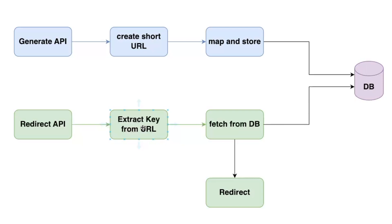The functionality is very basic. We'll have a generate API — when it receives a request to convert a long URL to a short URL, it will create a key first, generate that key, then map the key with the long URL and save it in the database. It will return a short URL with the key in it. When someone hits this short URL, it will first extract the key from the URL, then fetch the long URL from the database based on the key, and redirect with a 302 status code.